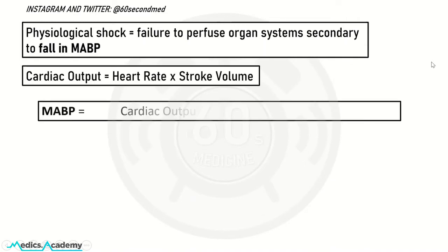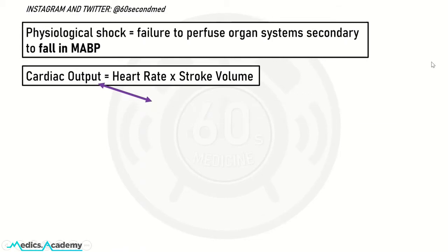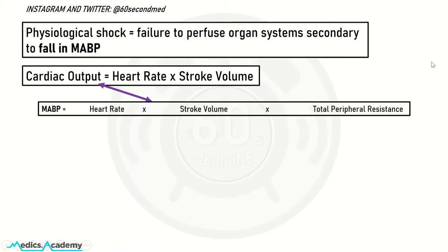Mean arterial blood pressure equals cardiac output times total peripheral resistance. Since cardiac output appears in both equations, we can think about mean arterial blood pressure as heart rate times stroke volume times total peripheral resistance.